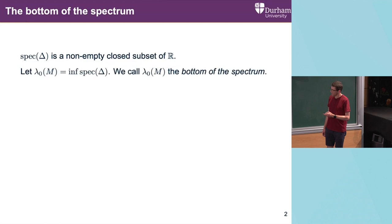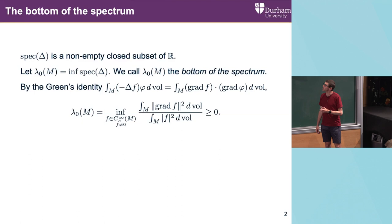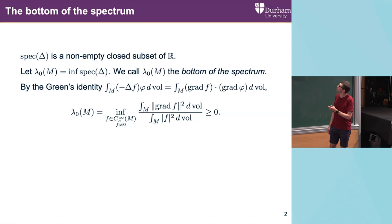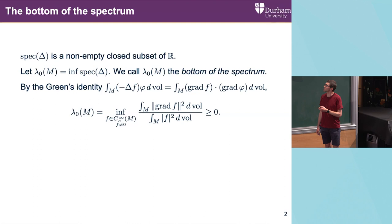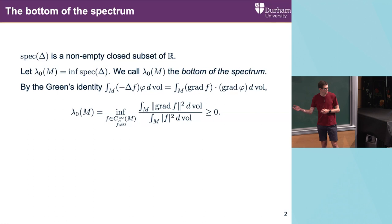What we'll call the bottom of the spectrum, we denote by lambda zero of M. We start off by saying this is the infimum of the spectrum. We have Green's identity, which lets us express the bottom of the spectrum in terms of this Rayleigh quotient. Since it's a quotient of two positive quantities, this is always non-negative. So the bottom of the spectrum will be non-negative, and this is why we chose to look at the eigenvalues or generalized eigenvalues of minus the Laplacian.